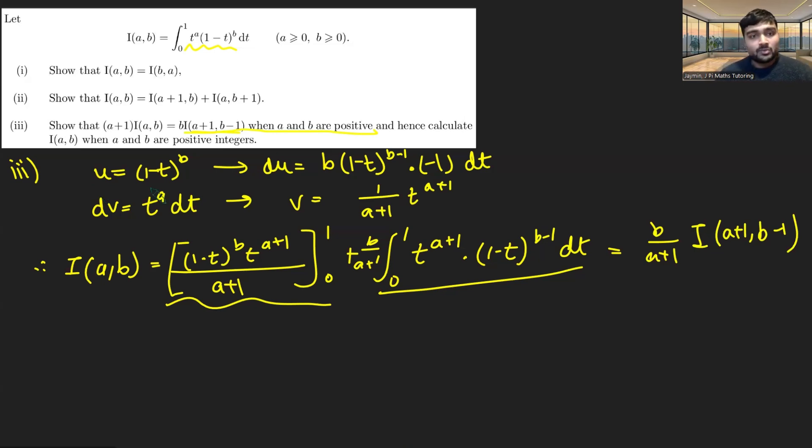How can we solve this? Well, we just use what we've just worked out. So I(a,b) is equal to b over a+1 multiplied by I(a+1,b-1). So broadly speaking, if you want to work out the value of I(a,b), there's some constant at the front multiplied by, well you just increase the a by 1 and decrease the b value by 1.